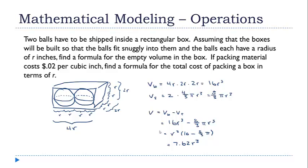Now that's nice, but it's not quite what I was asked for. I was asked to find the cost of the packing material. So the cost is going to be the volume times the unit cost. And the volume is 7.62 r cubed. The unit cost is 0.02 dollars per cubic inch. And if I multiply that out, this comes out to 1.52 r cubed. So there is my cost function, my cost model for this particular shipping situation.